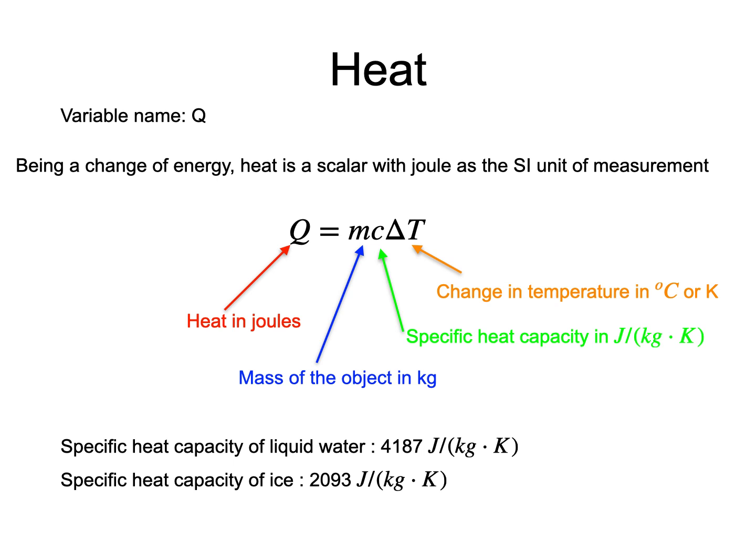In a previous lecture, we had defined another measurement unit for energy, the food calorie, a measurement unit very much in use in the food industry. One food calorie was defined as being equal to 4187 joules.